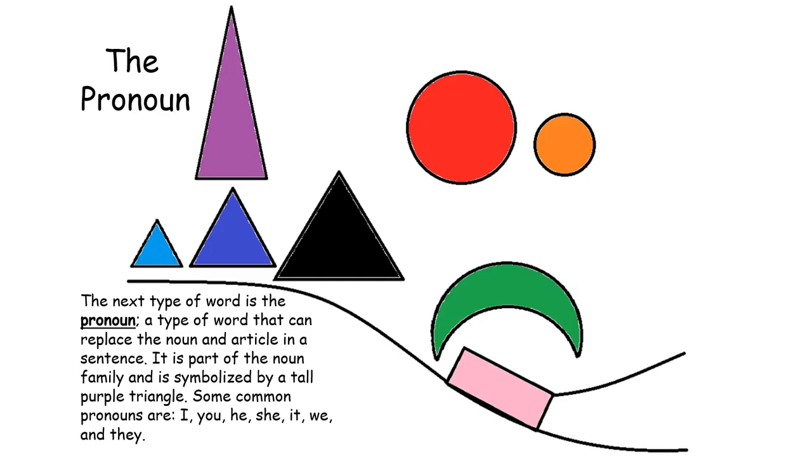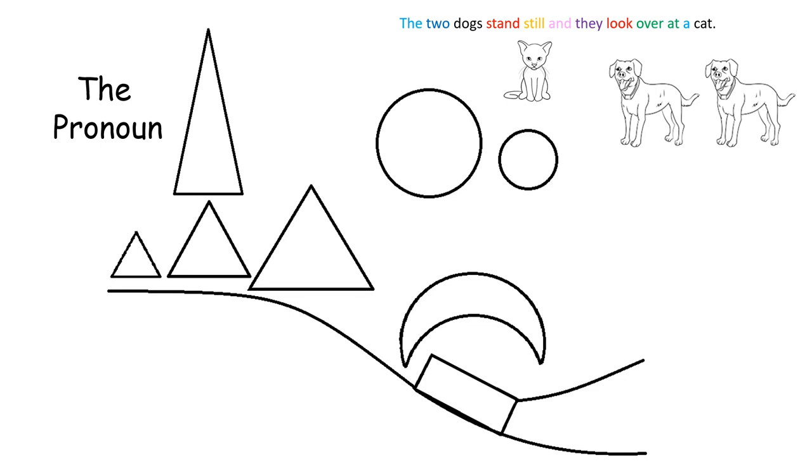The next type of word is the pronoun, a type of word that can replace the noun and article in a sentence. It is a part of the noun family and is symbolized by a tall purple triangle. Some common pronouns are I, you, he, she, it, we, and they. In this sentence, you can see that I have replaced the second set of words for the two dogs with the word they and colored it purple for the pronoun. When we use pronouns, we make our writing sound more interesting by avoiding repeating the same thing over and over again.